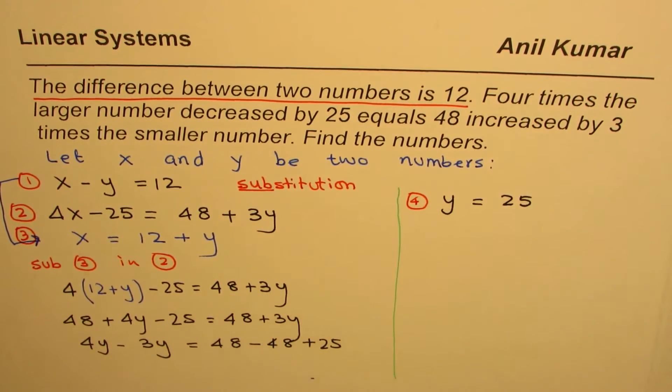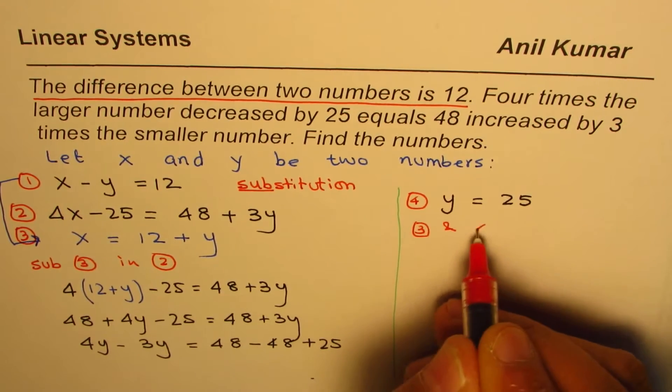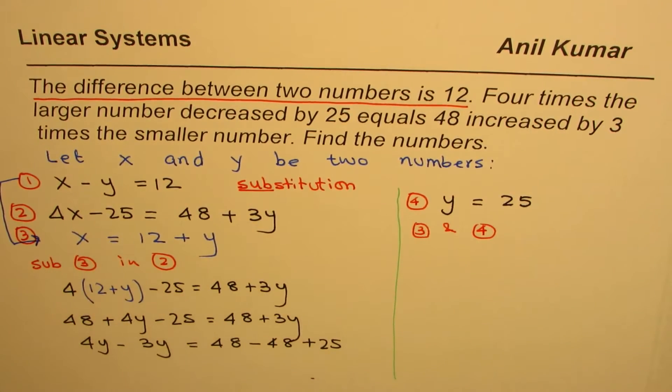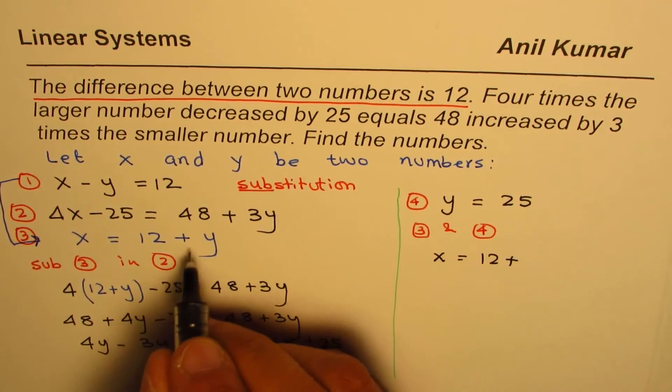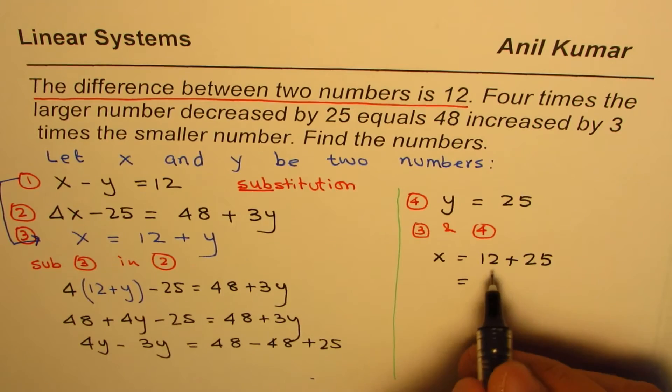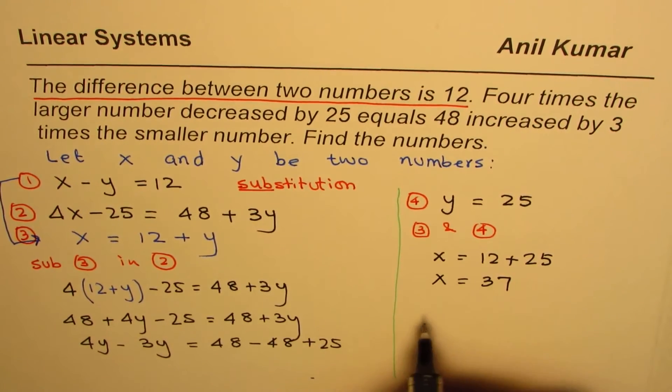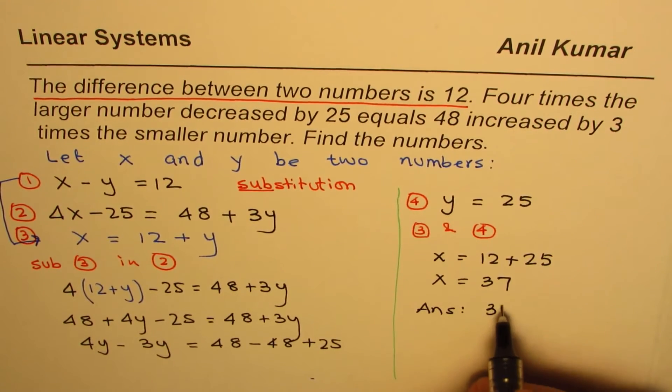From equations 3 and 4 we can find the value of X. X equals 12 plus Y, which is 25, so X is 37.